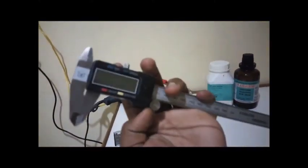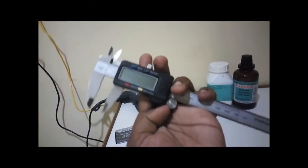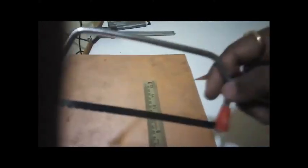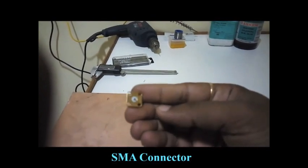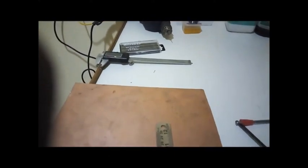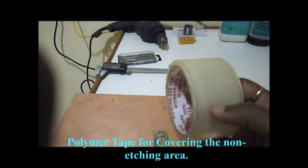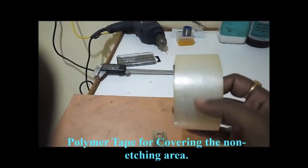The PCB was measured and marked using this ruler. Then it will be cut. This hex is used for cutting the holes. This SMA connector is used for feeding the antenna, and this cello tape is used on the substrate where the etching is not required.